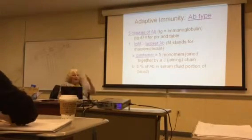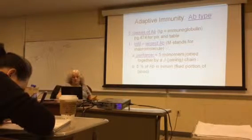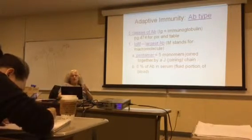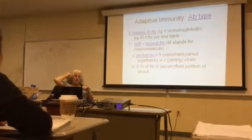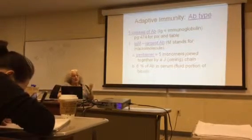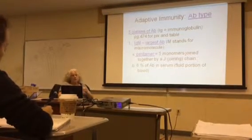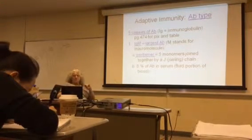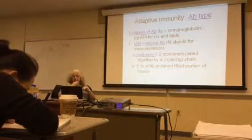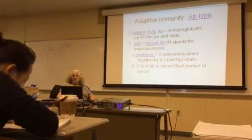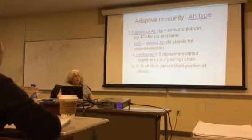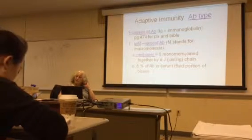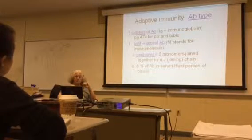There are five classes of antibodies or immunoglobulins. There's a table on page 474 of your book with pictures of these as well. The first one is called IgM. That one is the largest, and that M stands for macromolecule. It's a pentamer — meaning what we've drawn is a monomer, just one antibody with two arms. The pentamer is five of these joined together by a J chain, and they make up about six percent of the antibodies in the serum, which is the fluid portion of the blood.